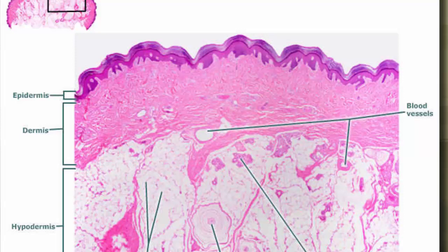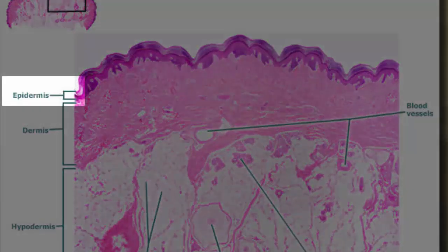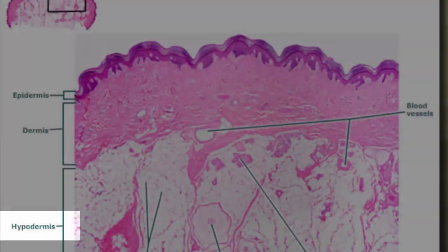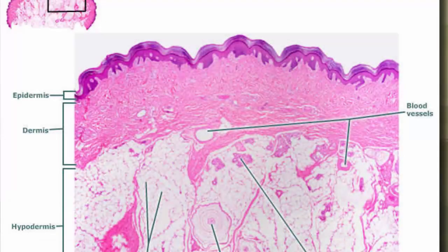Let's take a look at a histological slide of the skin to see the two layers of the skin and the underlying layer that helps to anchor the skin in place. The two layers of skin are the epidermis and deep to that is the dermis, and then underlying the dermis we have the hypodermis. This is not part of the skin but helps to anchor the skin in place.